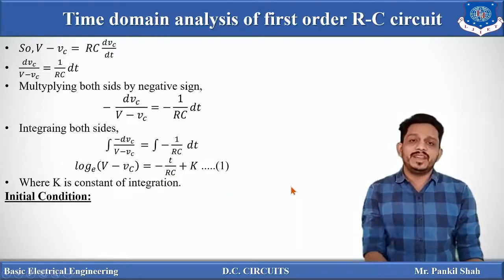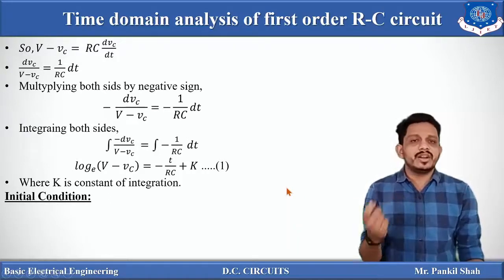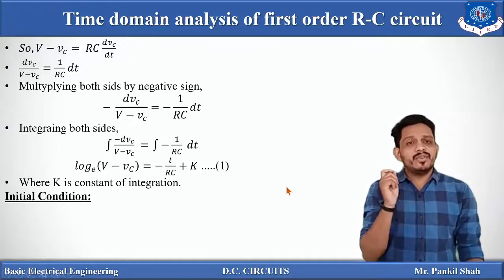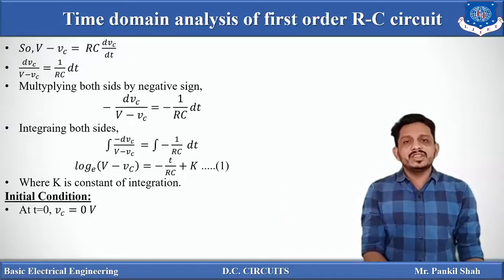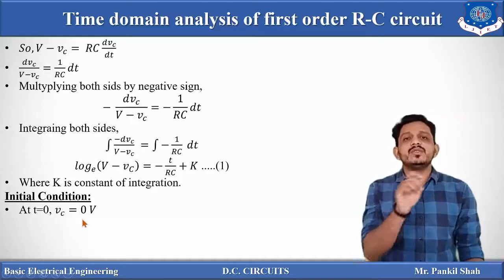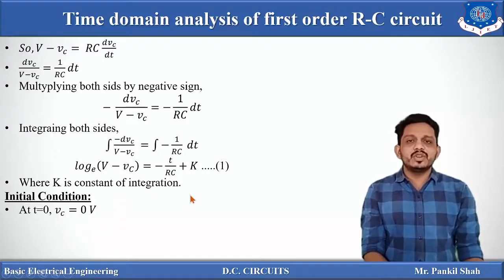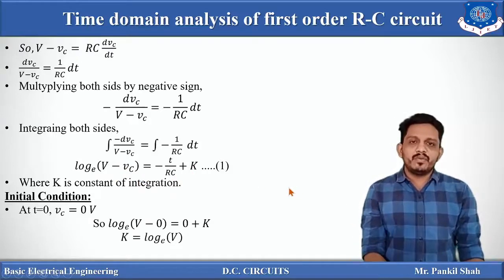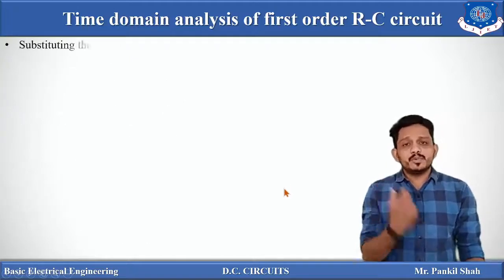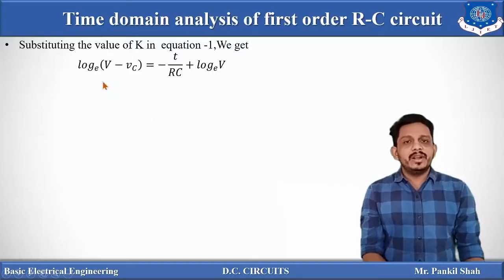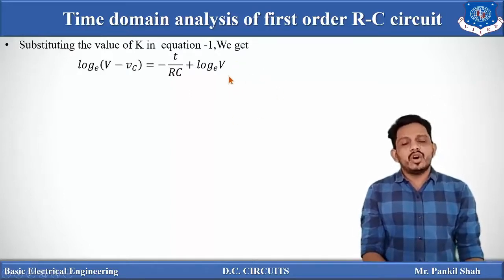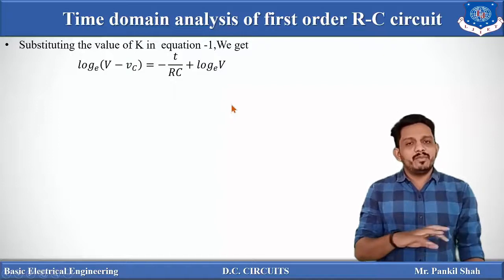Our aim is to find the value of K using the initial condition. At time t = 0, the capacitor was uncharged, so Vc = 0. Substituting into the equation: log(V − 0) = 0 + K, so K = log V. Putting K = log V back into the equation: log(V − Vc) = −t/RC + log V. Taking both log terms to the LHS: log(V − Vc) − log V = −t/RC.